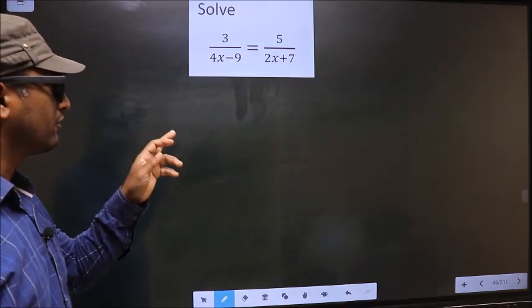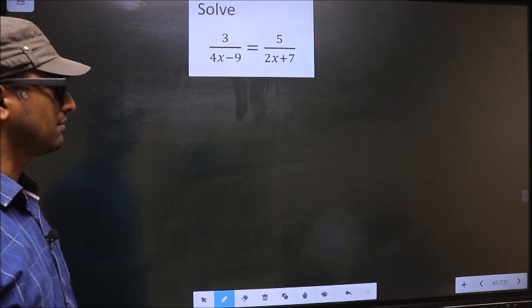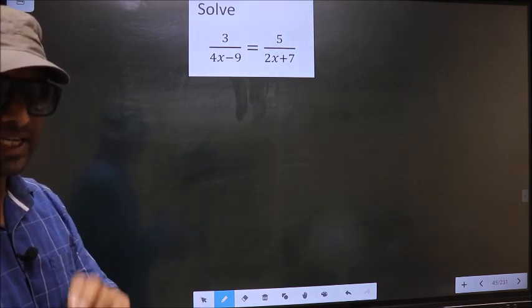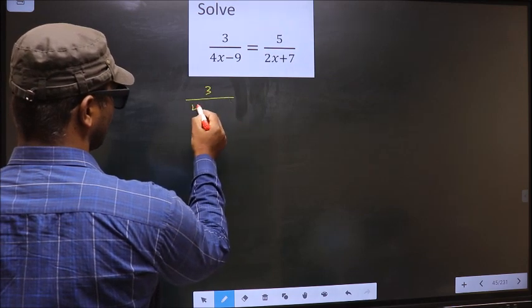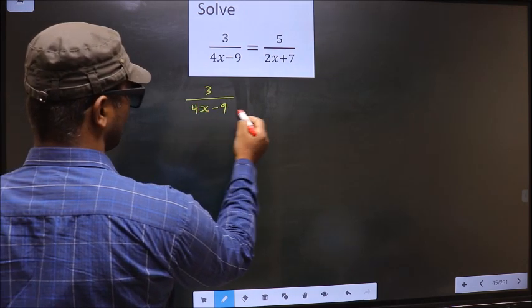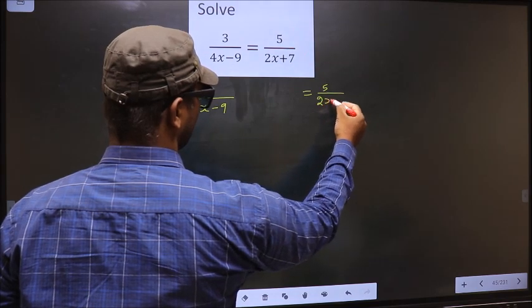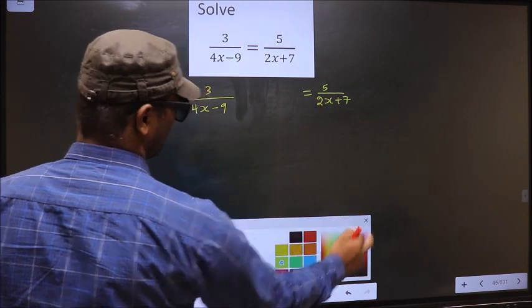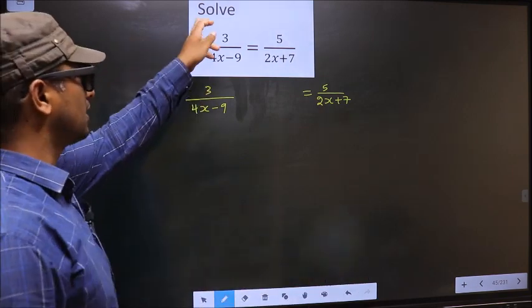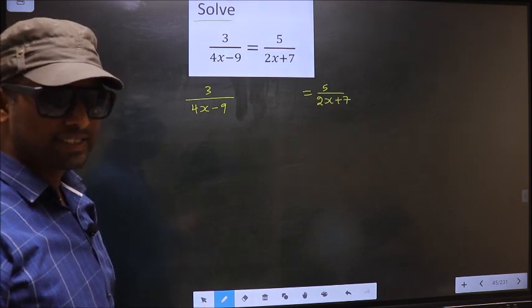Solve 3 by 4x minus 9 equal to 5 by 2x plus 7. First, given is 3 by 4x minus 9 equal to 5 by 2x plus 7. Now here they told us to solve, which means we should find the value of x.